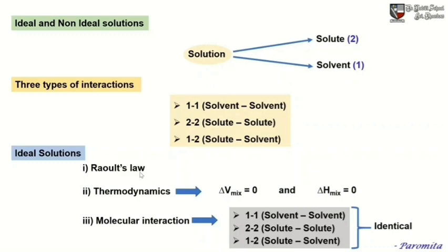The first condition: an ideal solution should obey Raoult's law, which we will cover in our next section. From thermodynamics, for a solution to be ideal it should have delta V mix equal to zero and delta H mix equal to zero. That means no volume change and no enthalpy change takes place on mixing the solute and the solvent in any proportion.